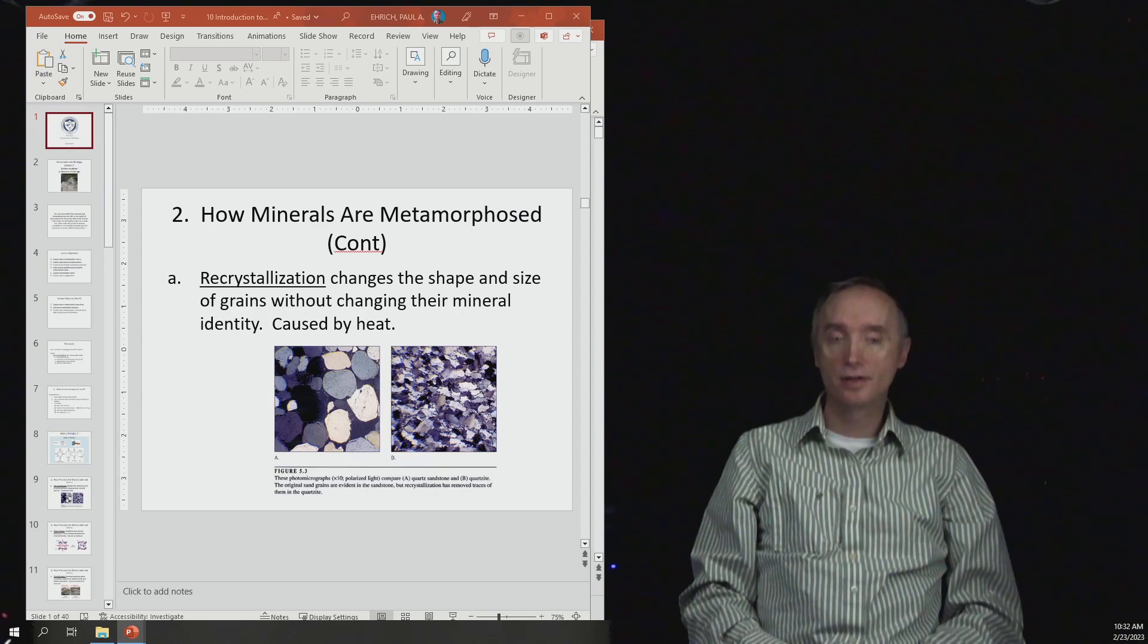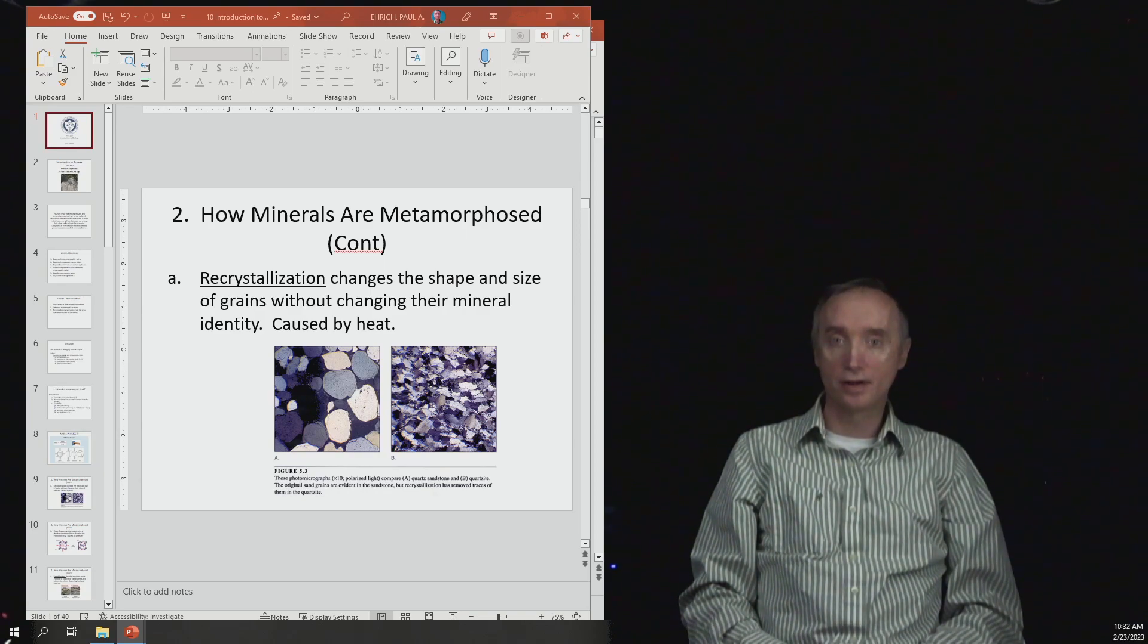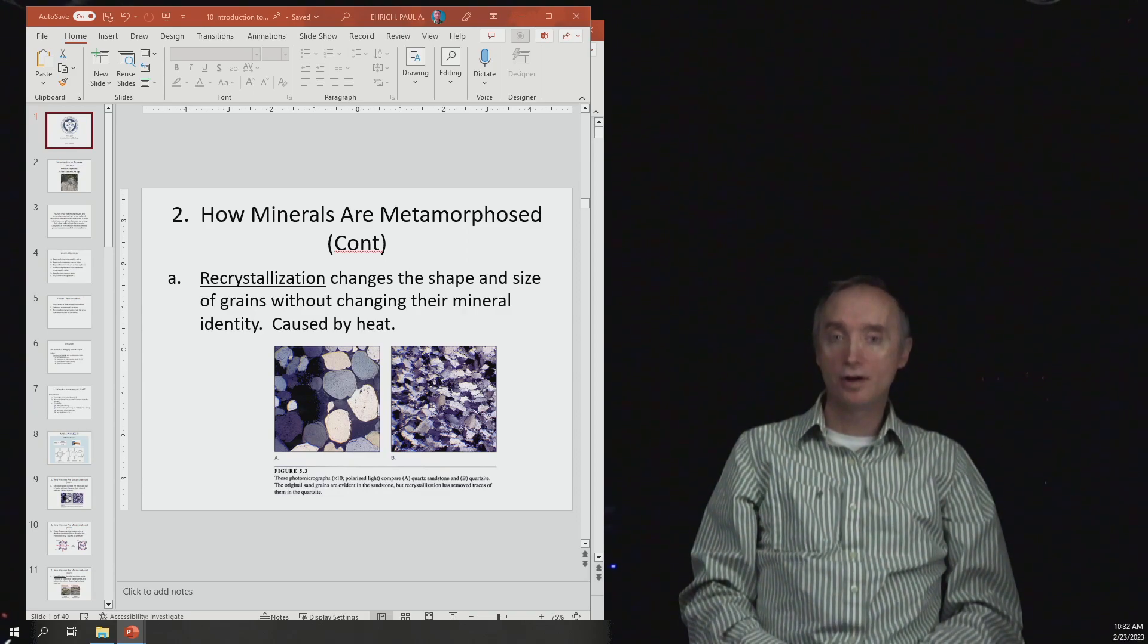The first one is called recrystallization. This changes the shape and size of the grains but doesn't change the mineral identity, and it's caused by heat.